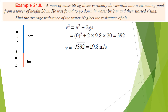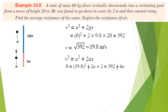v² = 0 + 2 × 9.8 × 20, giving final velocity v = 19.8 m/s. This is the initial velocity for Stage 2. In Stage 2: initial velocity = 19.8 m/s, final velocity = 0, displacement = 2 m. Using v² = u² + 2as, we find acceleration = −98 m/s².